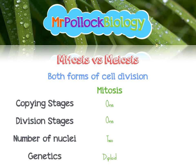We talk about diploid and haploid rather than full and half. Diploid is the full chromosome number in your adult state. Meiosis is completely different — there's still one copying stage but there are two division stages, and as a result we get four nuclei instead of two. Because we've divided twice but only copied once, the genetics of those cells are haploid — they contain half the genetic material.